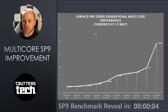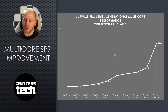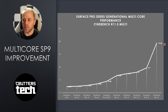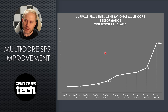Starting with multi core — this shouldn't be a surprise to anyone because we switched to Alder Lake and literally went from four cores to ten cores. This is a big uplift; you can see the growth — a big jump to 19.36. Really cool to see that. But let's take a look at single core and GPU.